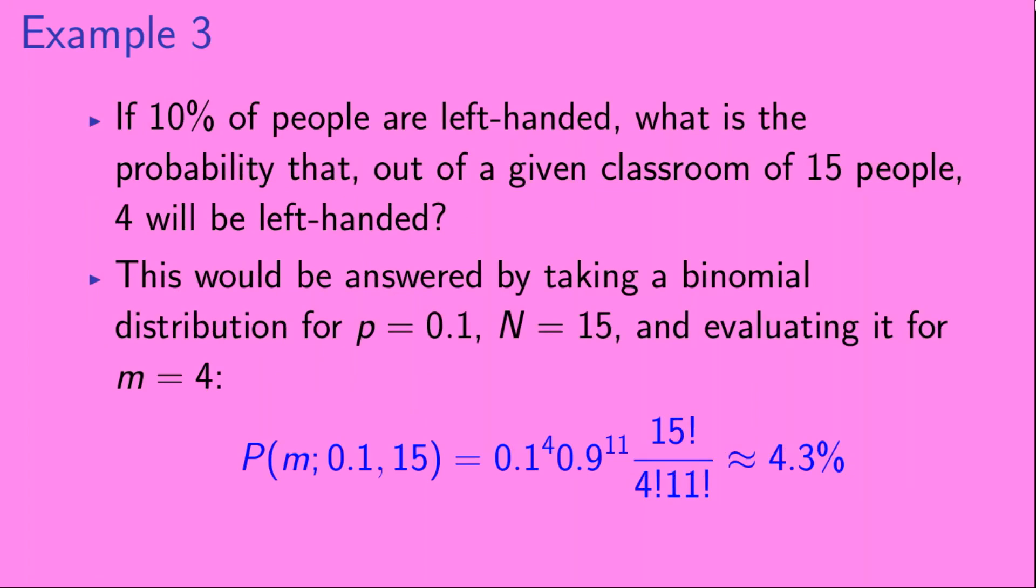Example 3. If 10% of people are left-handed, what is the probability that, out of a given classroom of 15 people, 4 of them will be left-handed? This would be answered by taking a binomial distribution for p equals 0.1, n equals 15, and evaluating it for m equals 4. And if we do that, we get about 4.3%.